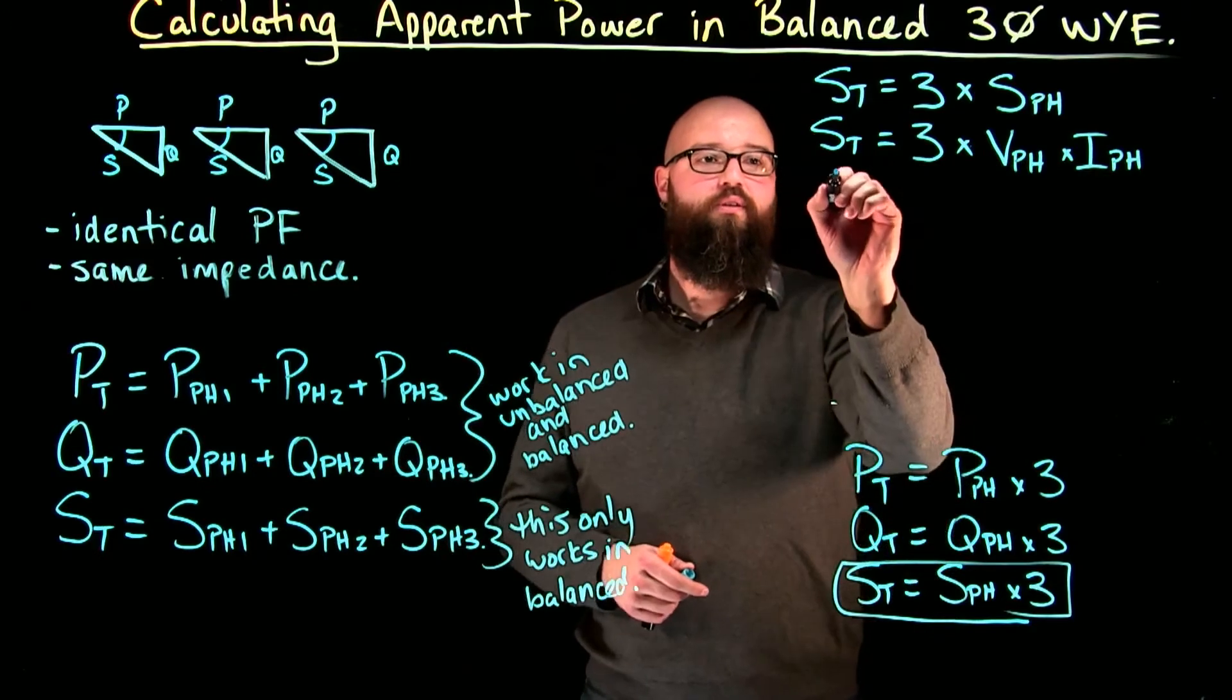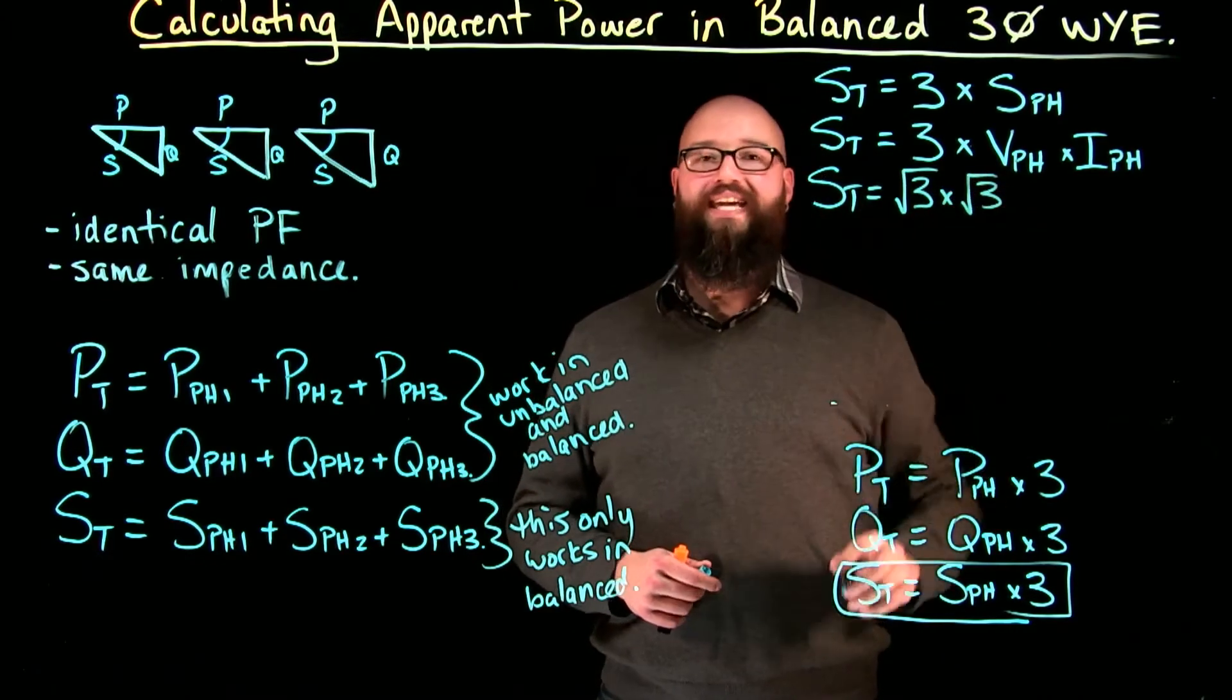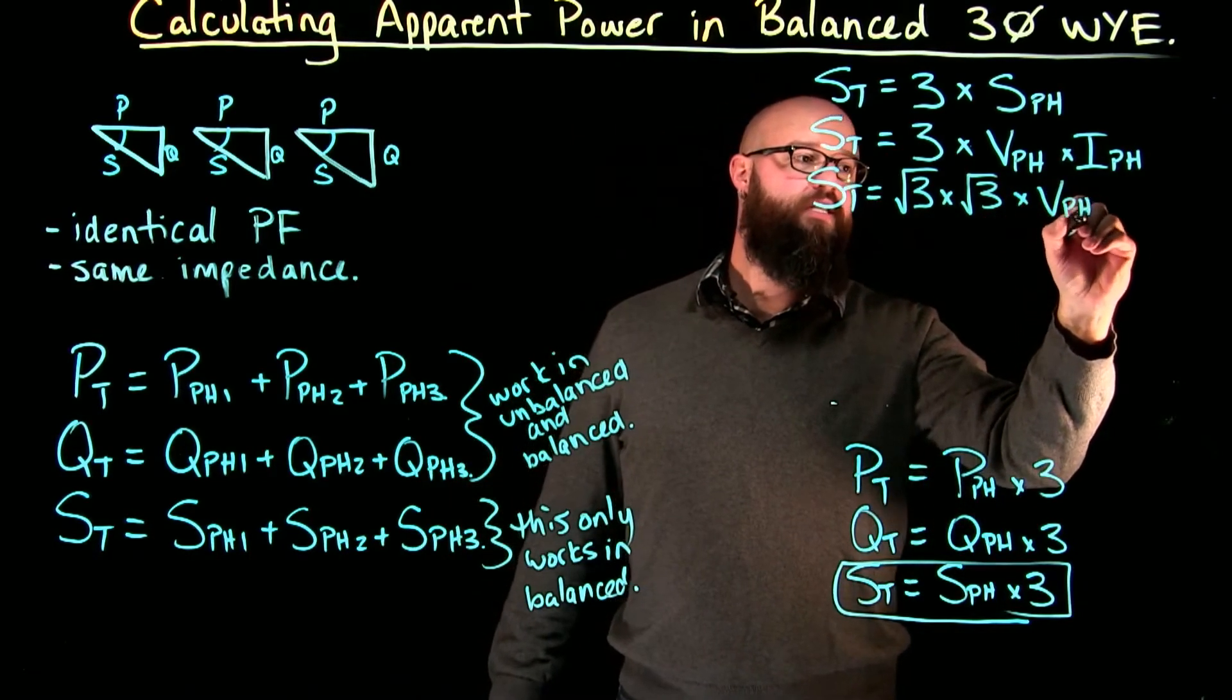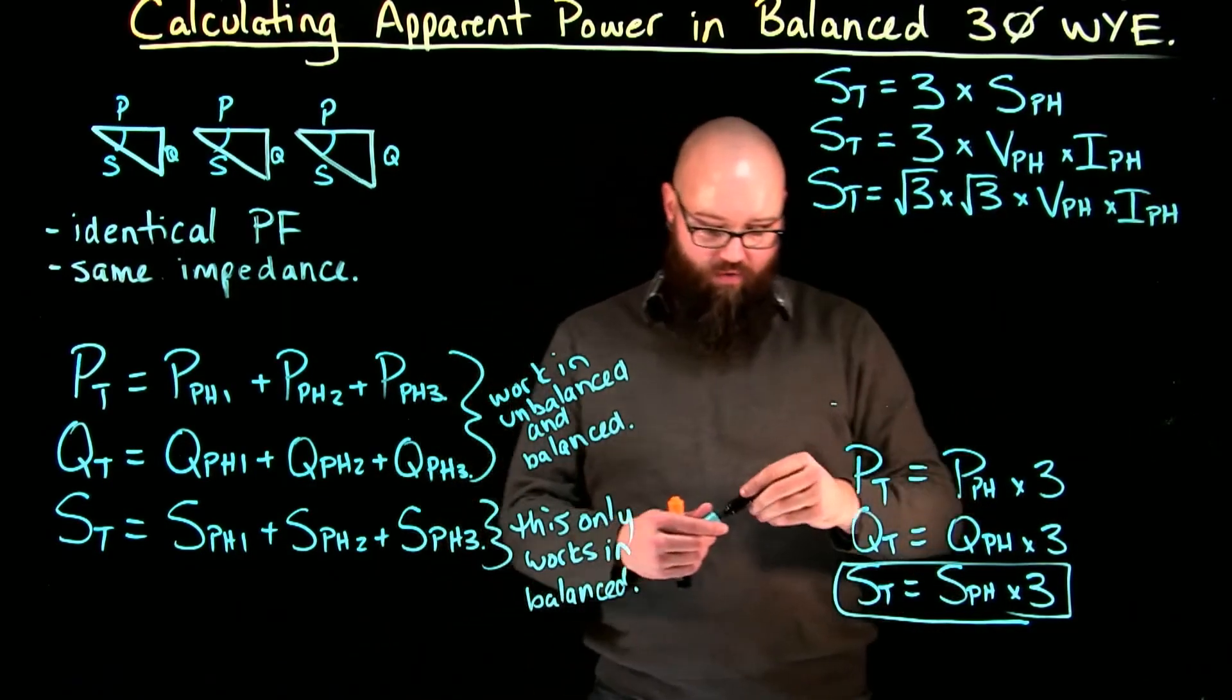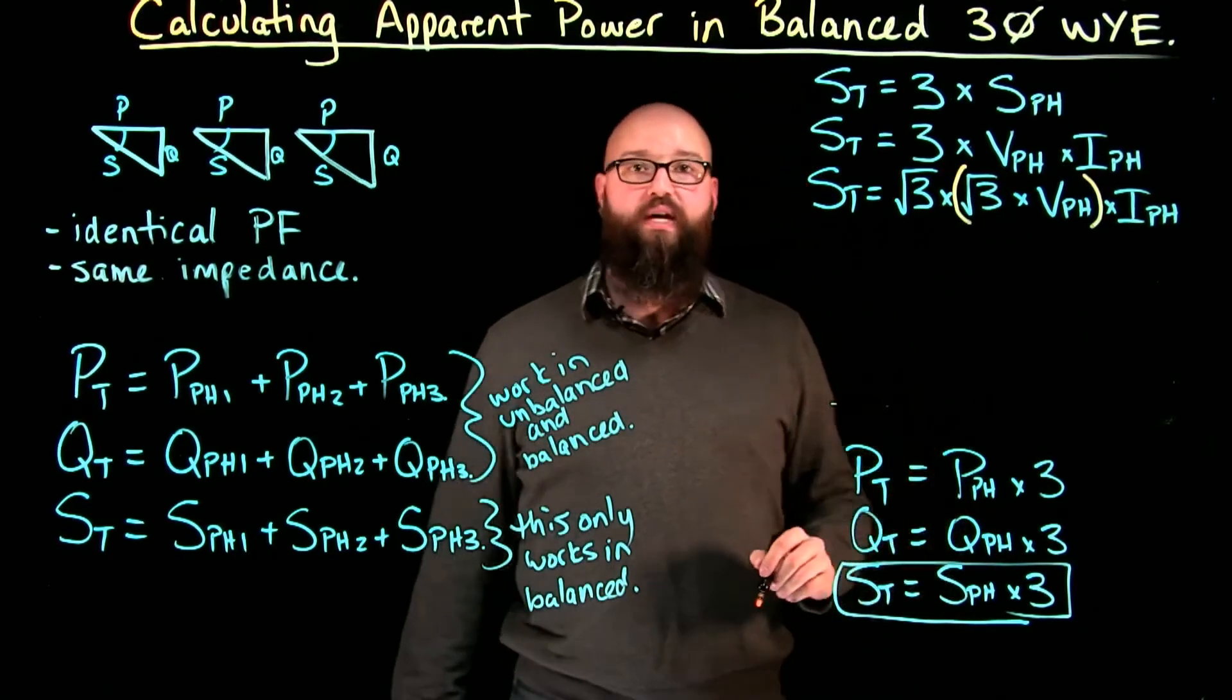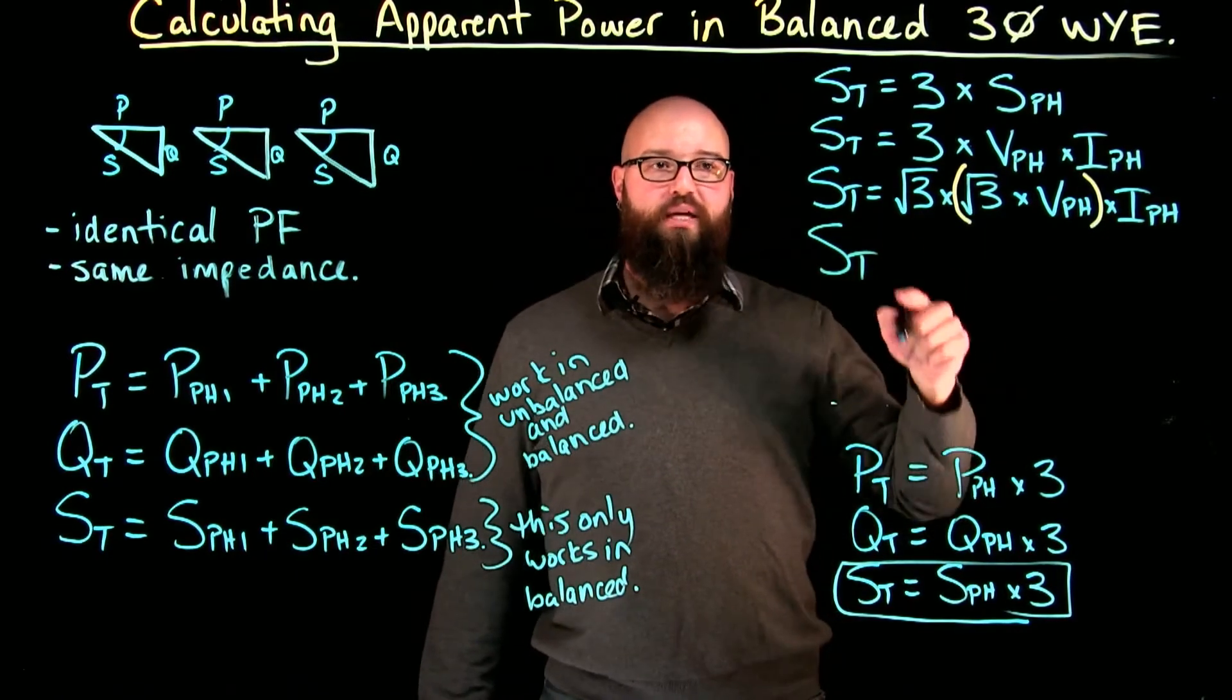If I break this down again, I can look at this S total equals, kind of a weird thing, root three times root three equals three. So we're really taking this three now and splitting it into root three twice, times voltage per phase times current per phase. Now if we look at what's inside this equation right now, we have root three times phase voltage. We have to know that root three times phase voltage will give me line voltage.